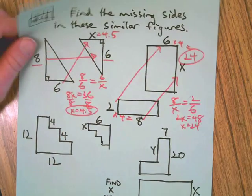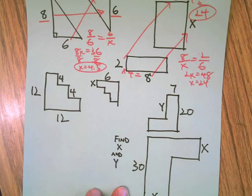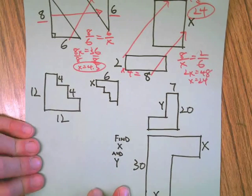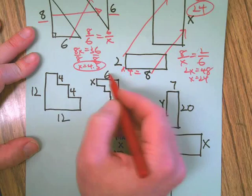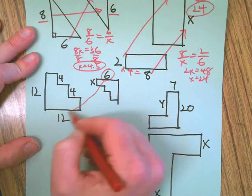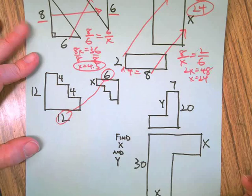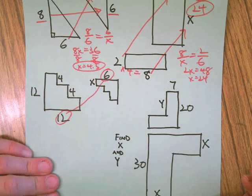It's not required that you use a proportion. You can use anything you want as long as it works and you show your work. Here we go, corresponding sides. Six goes to twelve. Oh, we need to find all the missing sides.